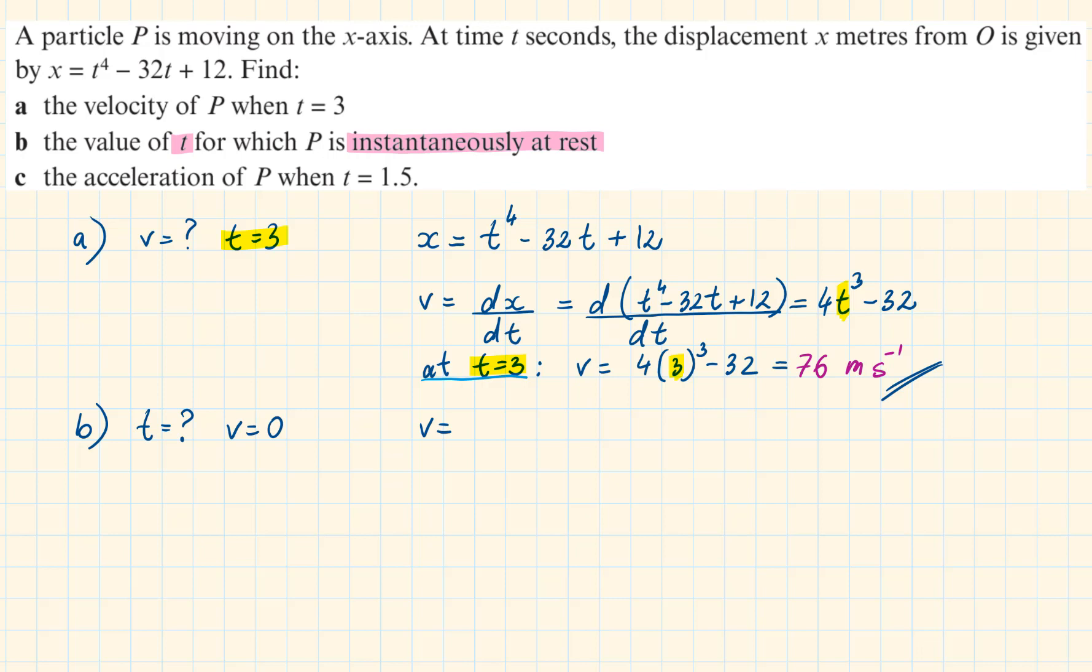Writing out the velocity as a function of time, we have v is equal to 4t cubed minus 32. Replacing v with 0, we have 0 equals 4t cubed minus 32. T cubed is 8, so t is equal to 2 seconds after we have cube rooted it.